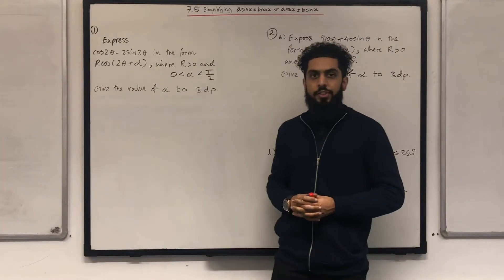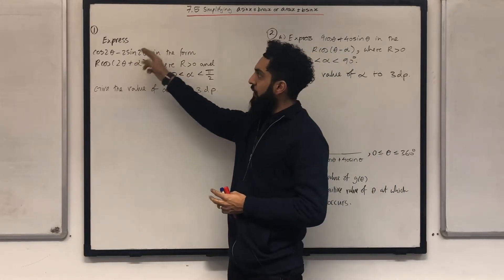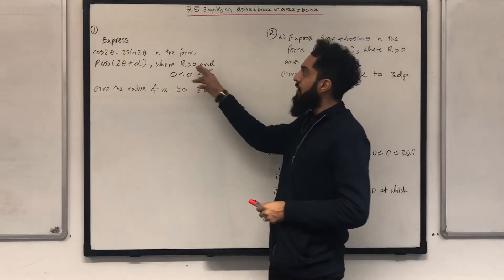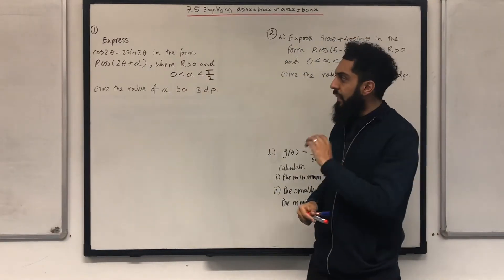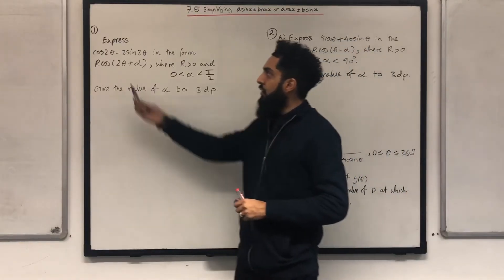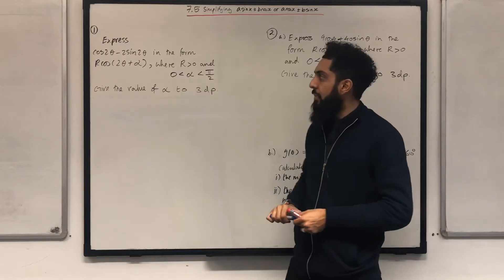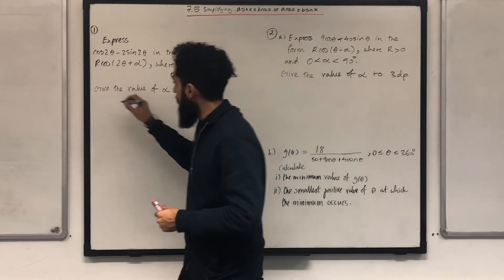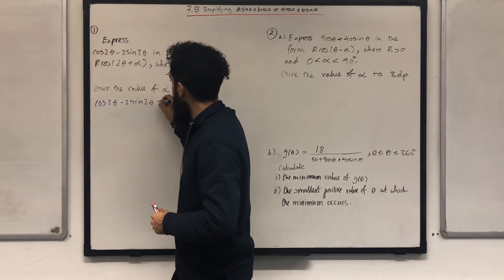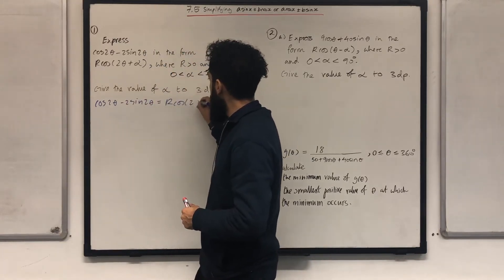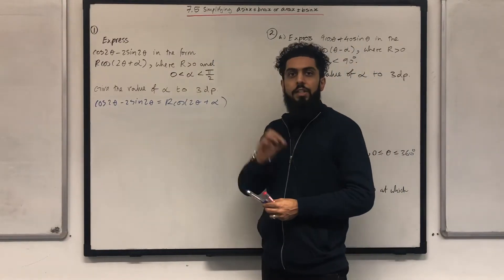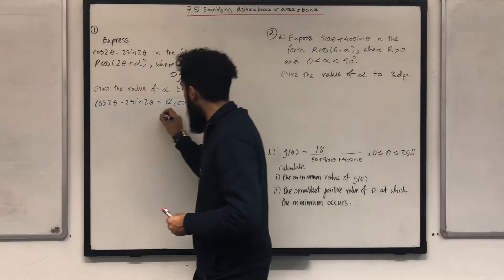Let's have a look at some exam questions. Question 1: express cos2θ − 2sin2θ in the form R cos(2θ + α), where R > 0 and α is between 0 and pi over 2. Give alpha to three decimal places. The first step is to set cos2θ − 2sin2θ equal to R cos(2θ + α), then expand using the addition formula for cos(A + B).